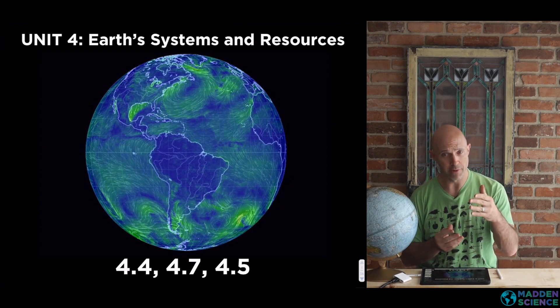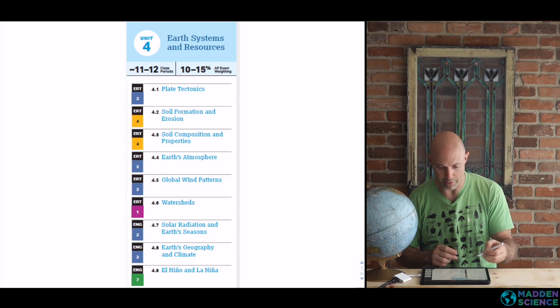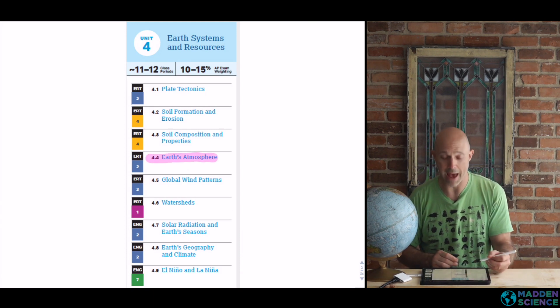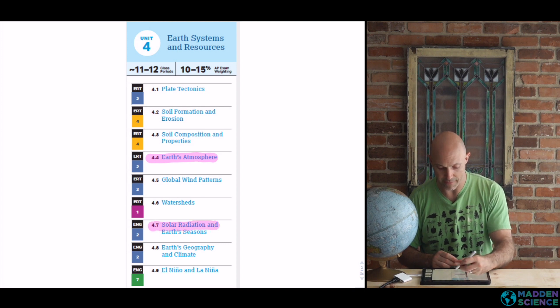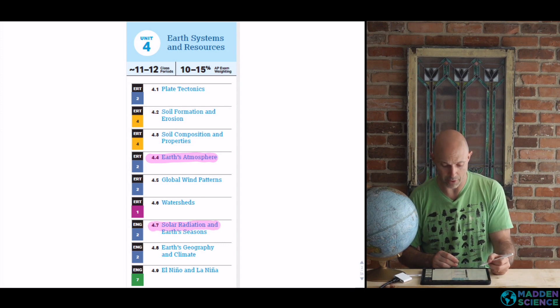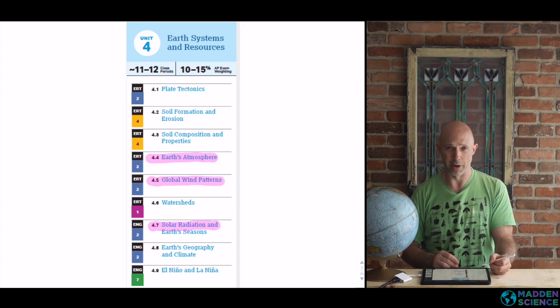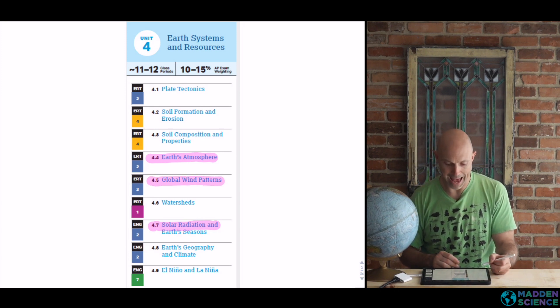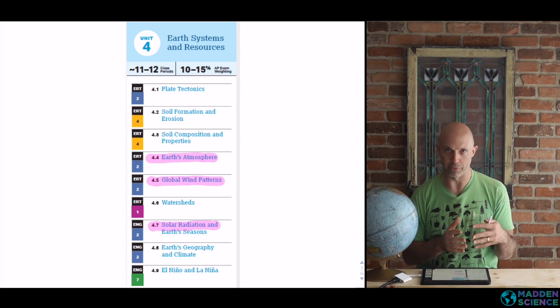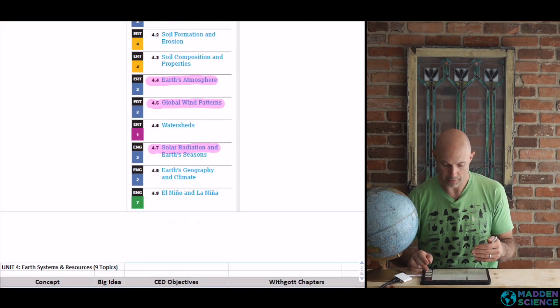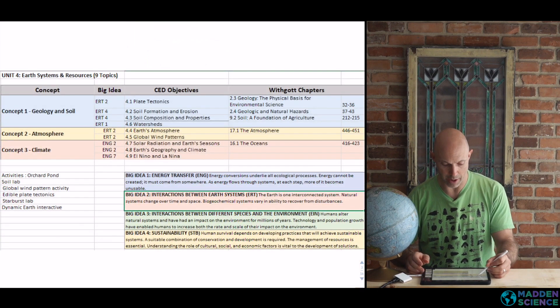What sections are those you ask? Well, here you go. We're going to be in on 4.4, Earth's atmosphere. Then we're going to jump to 4.7, solar radiation and Earth's seasons. And then that's going to feed us back into 4.5, global wind pattern. So really on the atmosphere and weather portions of Unit 4.